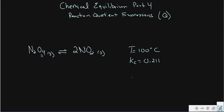Here's the question: what if I told you that my initial concentration of dinitrogen tetroxide gas was 1 molar, and that my initial concentration of nitrogen dioxide was 0.5 molar? So the question is, with a KC of 0.211, an equilibrium constant of 0.211, and the temperature of 100 degrees Celsius, what is this reaction going to do?